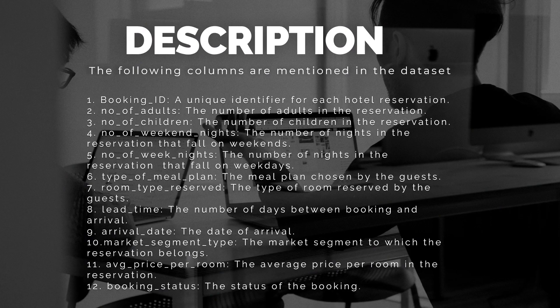Let's talk about the description. The following columns are mentioned in the dataset. Number 1: Booking ID — a unique identifier for each hotel reservation. Number 2: Number of Adults — the number of adults in the reservation. Number 3: Number of Children — the number of children in the reservation. Number 4: Number of Weekend Nights — the number of nights in the reservation that fall on weekends. Number 5: Number of Week Nights — the number of nights in the reservation that fall on weekdays.